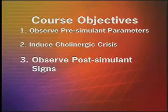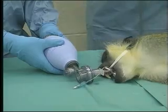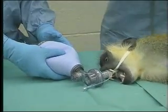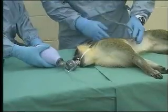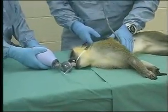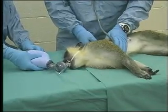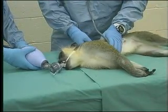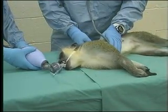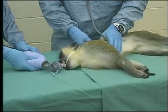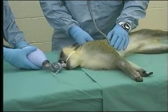Objective 3 is to observe the post-simulant clinical signs. The onset of clinical signs will be nearly immediate after the administration of physostigmine. A dramatic drop in heart rate will occur, but it will be brief. Onset of muscular fasciculations will make the heart rate rapidly rise again. This whole incident will occur in a matter of seconds.